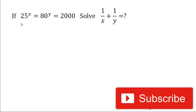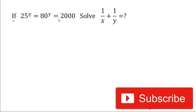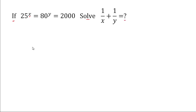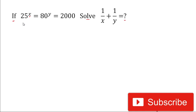Hey friends, welcome back again. Today in this video we will solve this algebraic expression. The given expression is: if 25 to the power x equals 80 to the power y equals 2000, then we will have to solve 1/x + 1/y equals what. Do not forget to give a thumbs up to the video and subscribe to my channel.